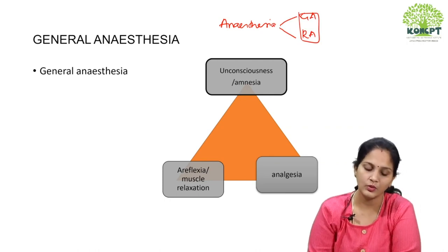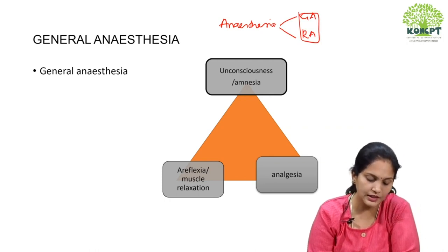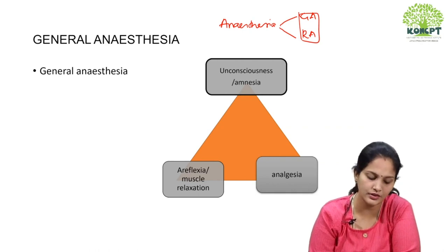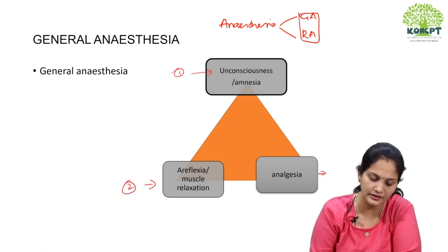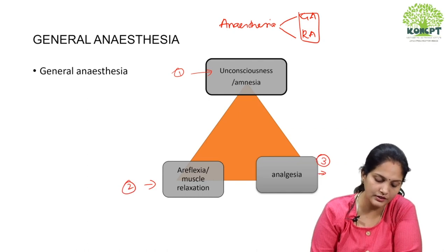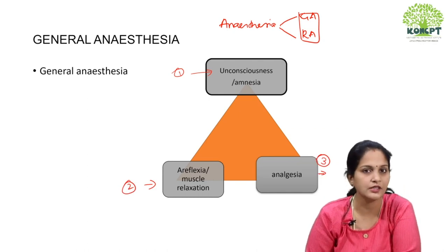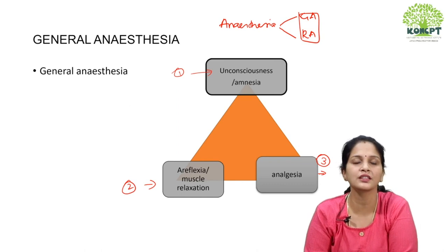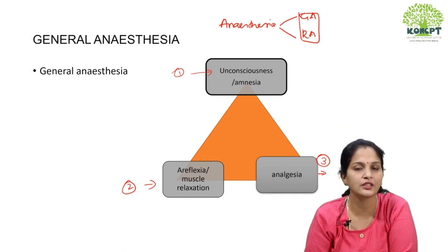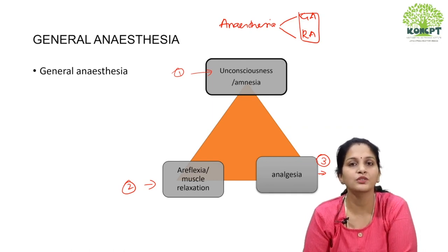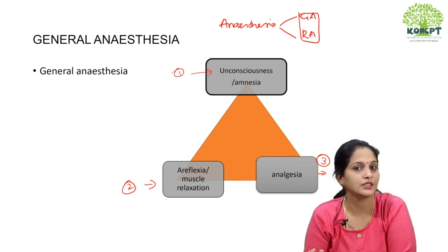How do these two differ? The triad of general anesthesia consists of: first, unconsciousness; second, areflexia or muscle relaxation; and third, analgesia. All three components must be present in general anesthesia. In regional anesthesia — such as spinal, epidural, or any peripheral nerve block — the patient does not lose consciousness.